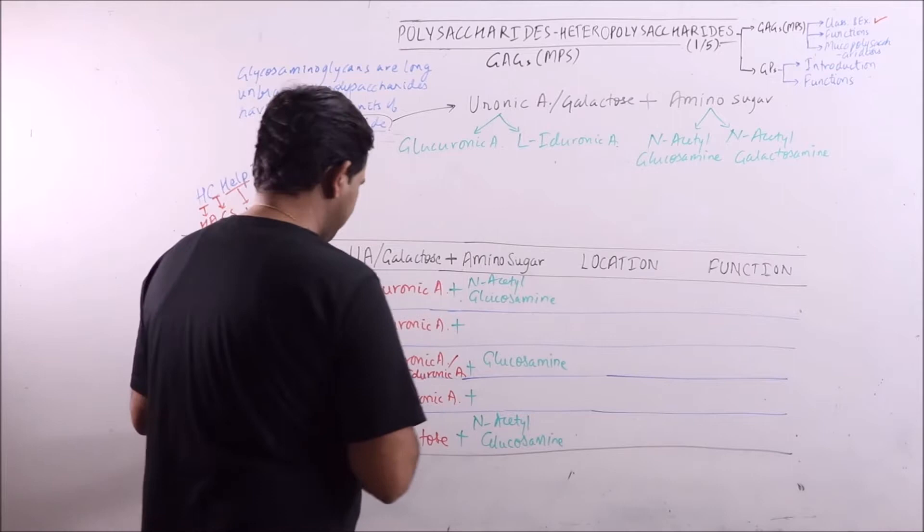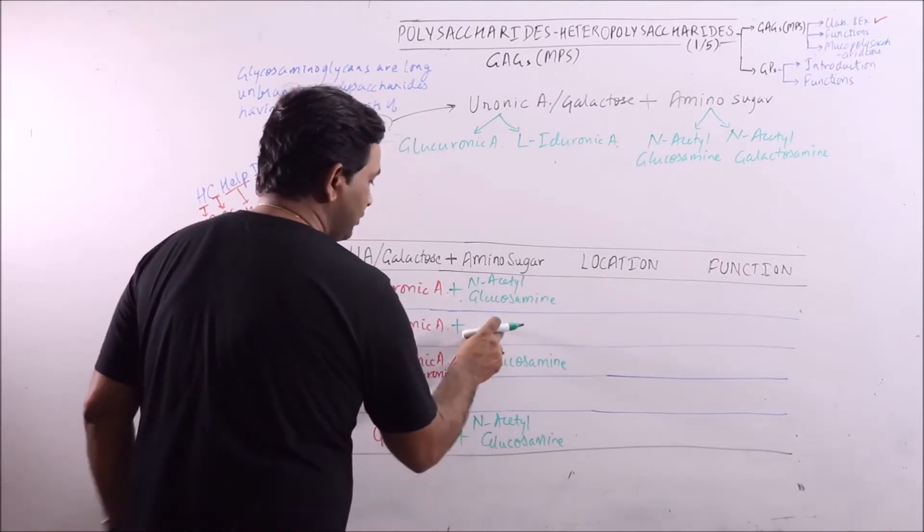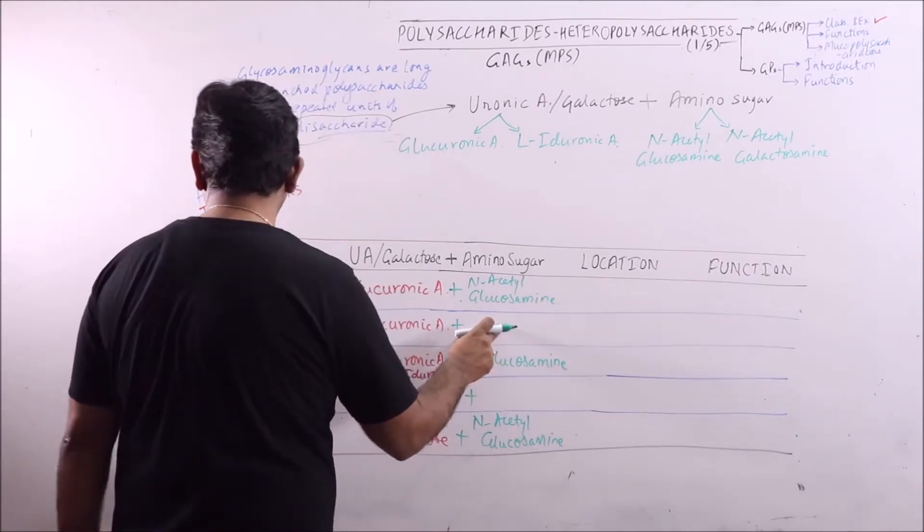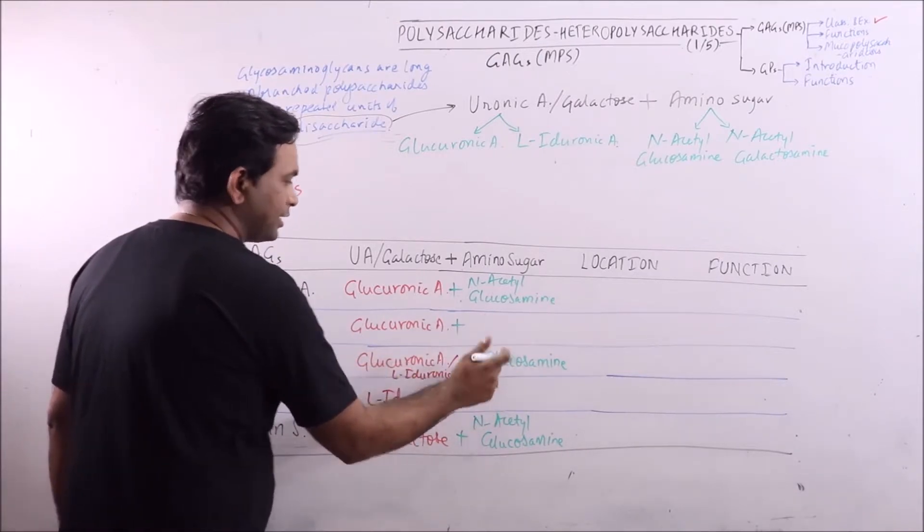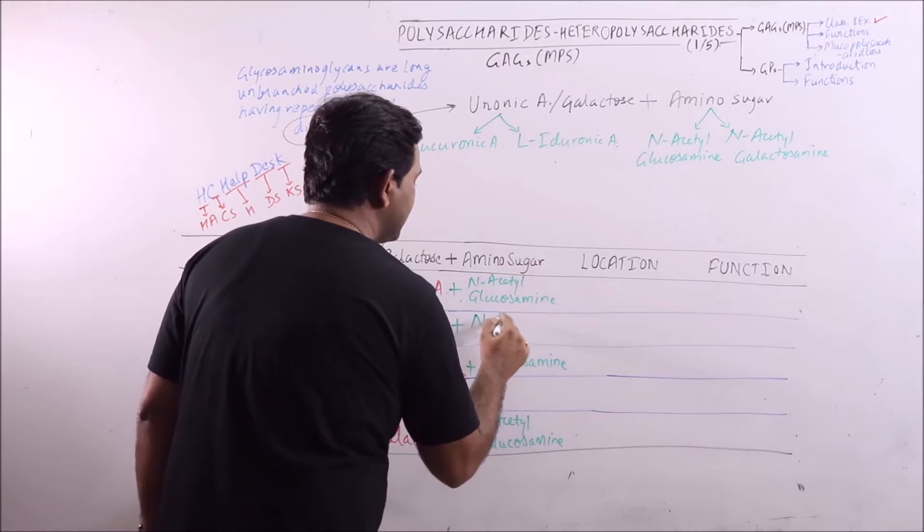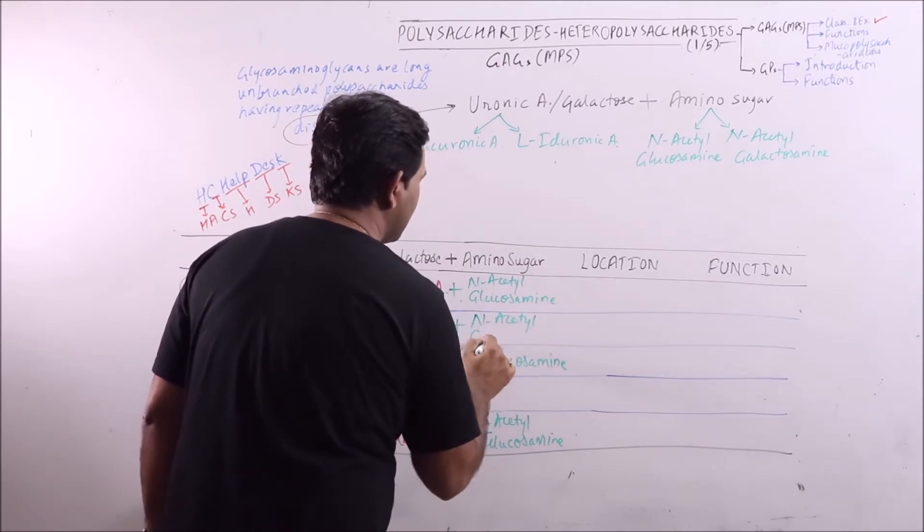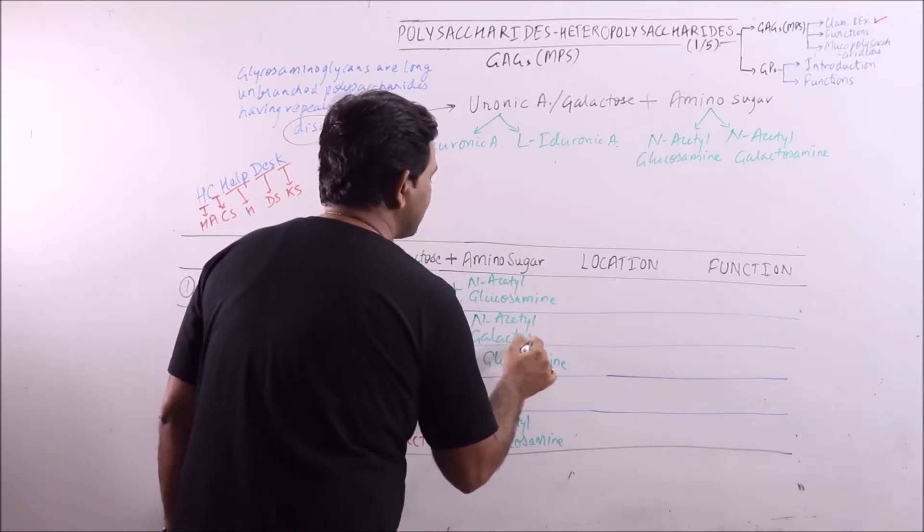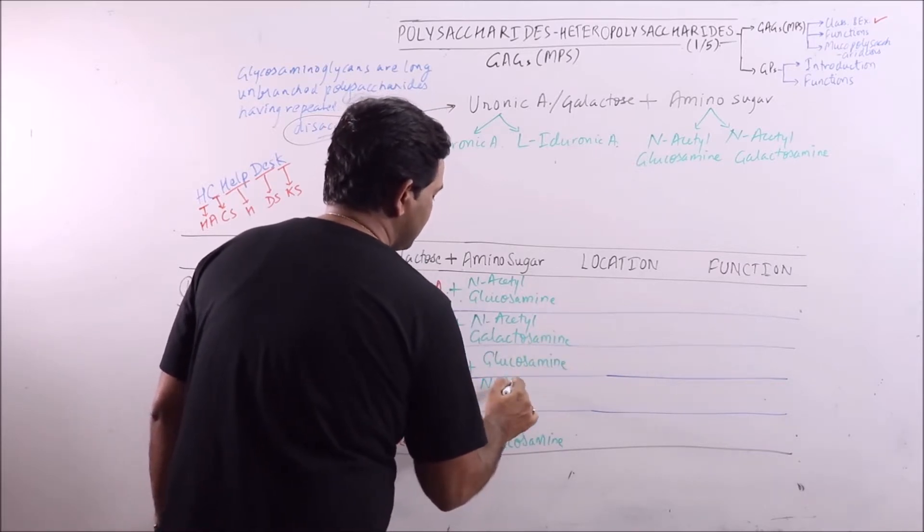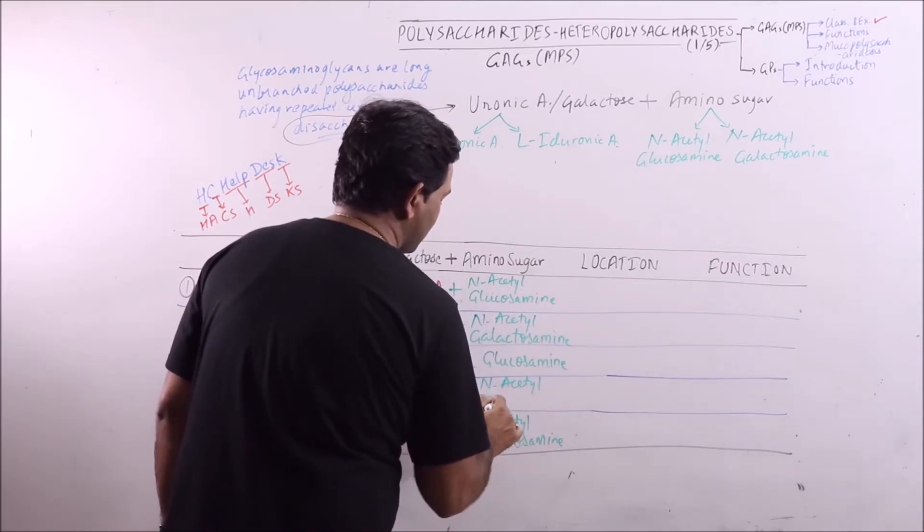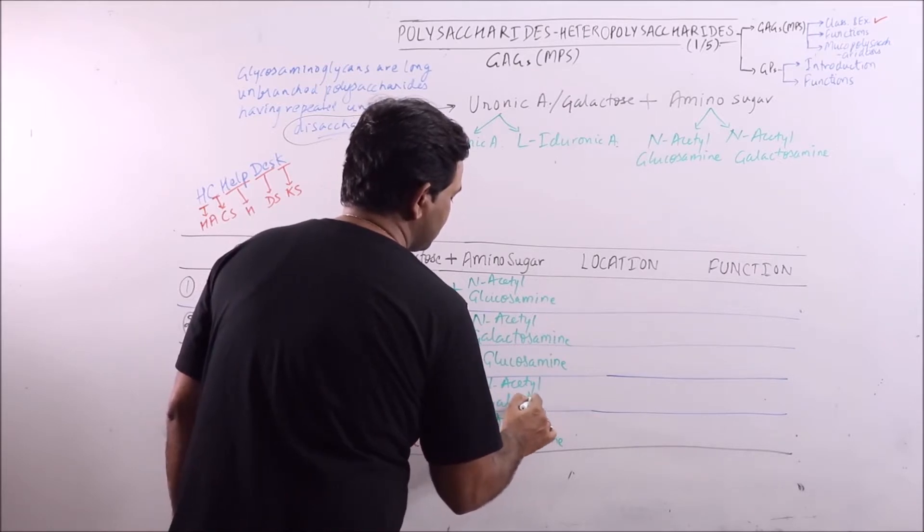Then the remaining GAGs, that is chondroitin sulfate and dermatin sulfate, these are also alternate. So N-acetyl galactosamine and glucosamine.